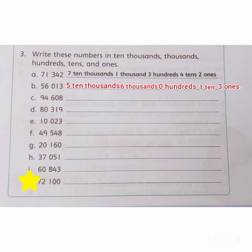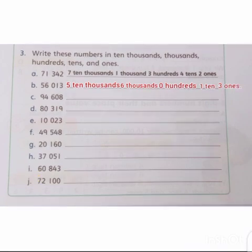Look at part J, 72,000 and 100. 10,000 ki place value mein, hame 7 given hai, toh, ham 7, 10,000s write kareenge. 1000 ki place value mein, hame 2 given hai, toh, ham 2, 1000s write kareenge. 100 ki place value mein, hame 1 given hai, toh, ham 100 write kareenge.